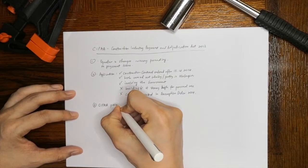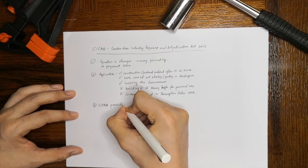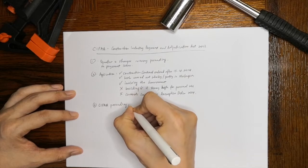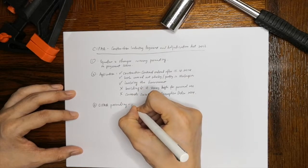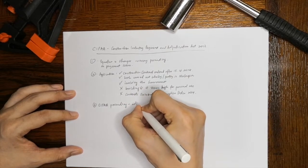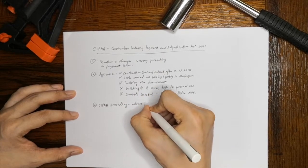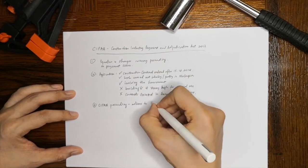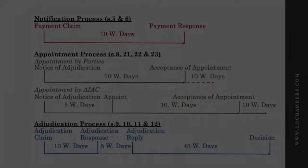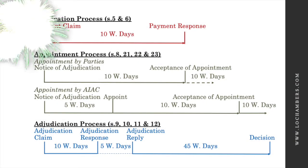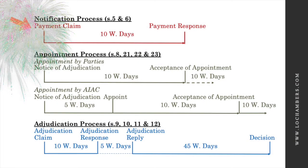To initiate the SIPA proceeding, the parties will be required to adhere to the strict timeline as prescribed in the Act. The unpaid party will first serve a payment claim on the non-paying party, who has 10 working days to respond.